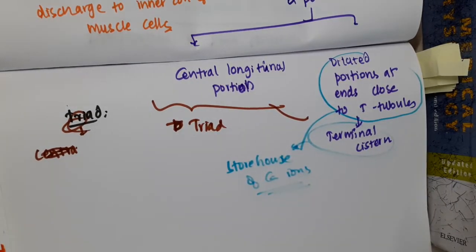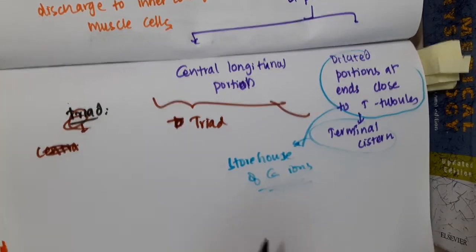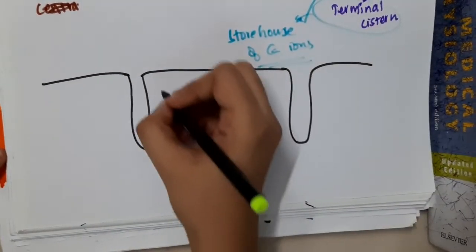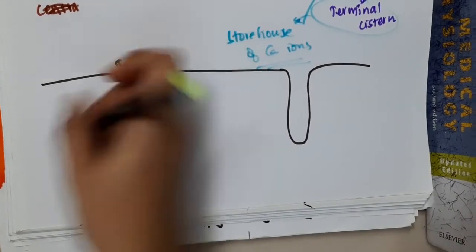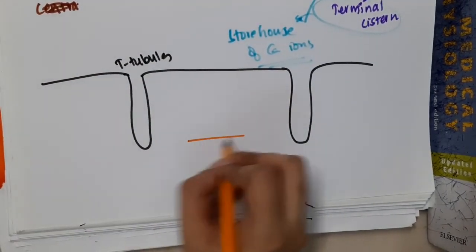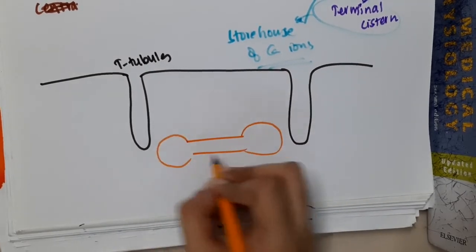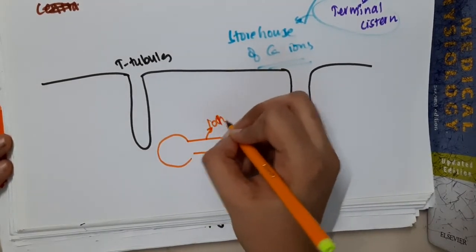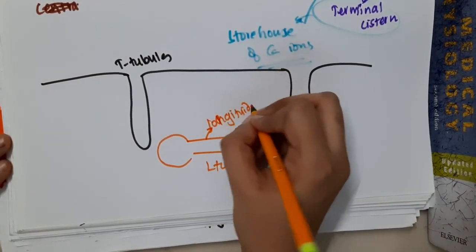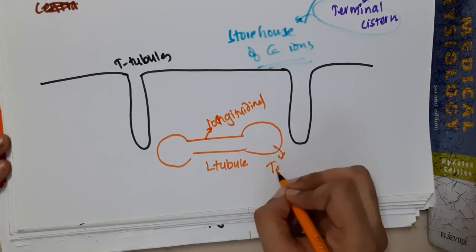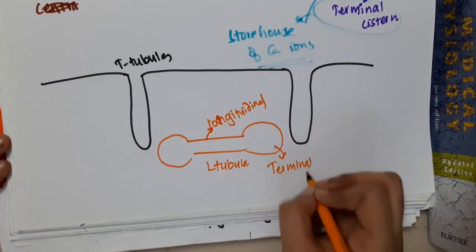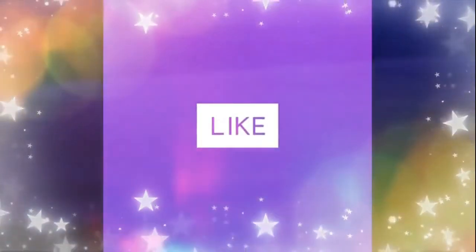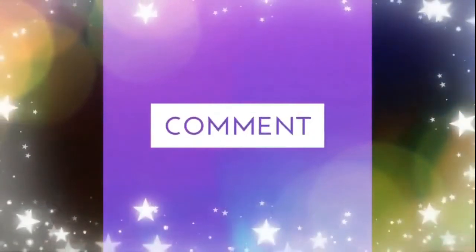To summarize with a diagram: the sarcolemma has infoldings forming the T-tubules. The sarcoplasmic reticulum runs longitudinally as the L-tubule, and the terminal cisternae at the ends serve as the highest storehouse of calcium ions.